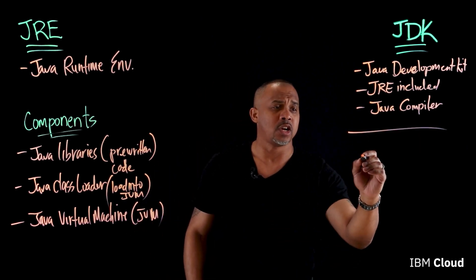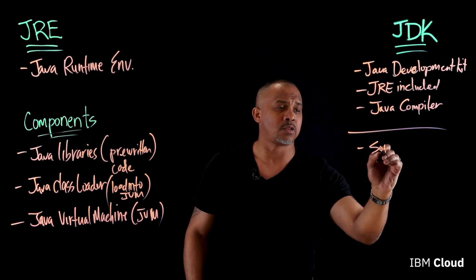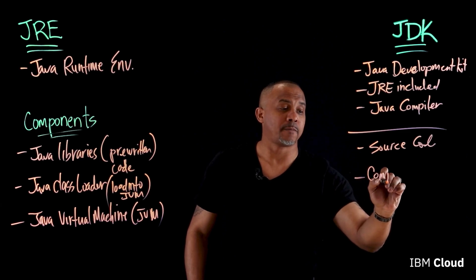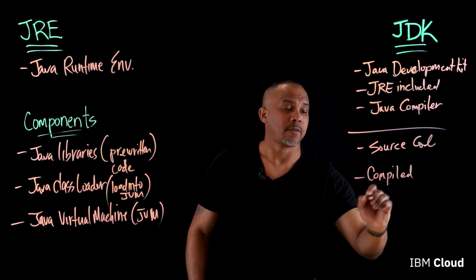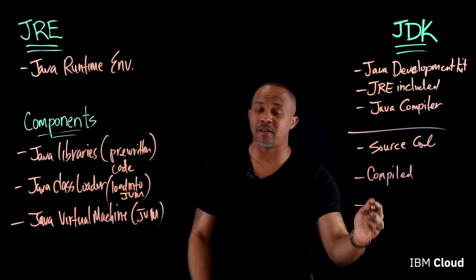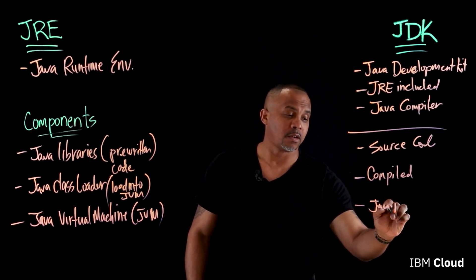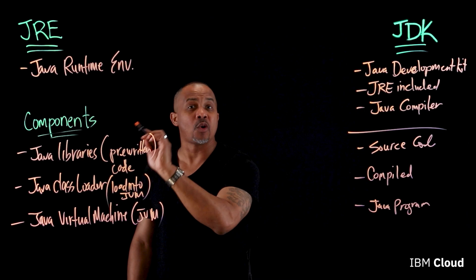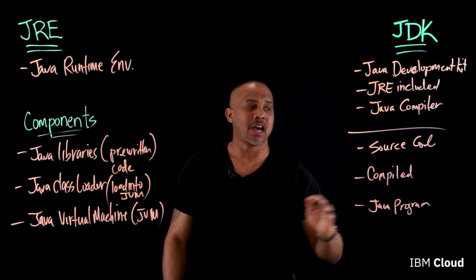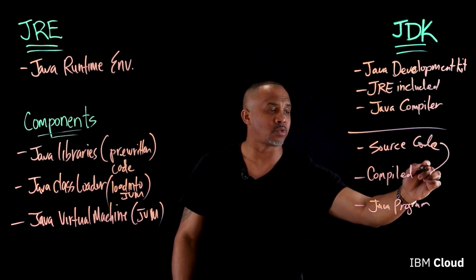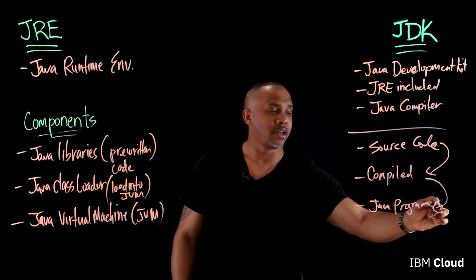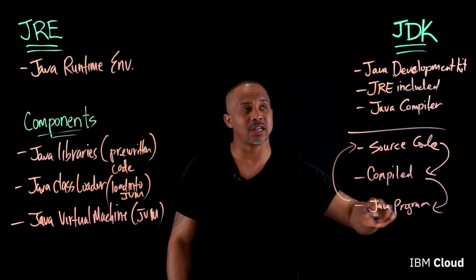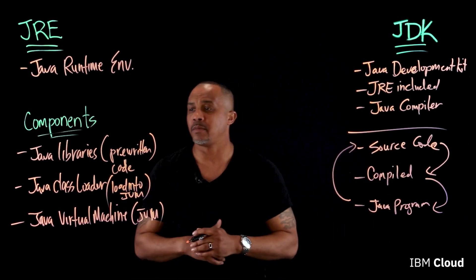Whenever you start writing applications, you'll start with source code. That source code will have to be compiled, and then the final version is the actual Java program. You can then distribute it to someone else and all they may need is the JRE. As you make changes to source code, you compile it, run it, and then start back over — a continuous iterative loop.